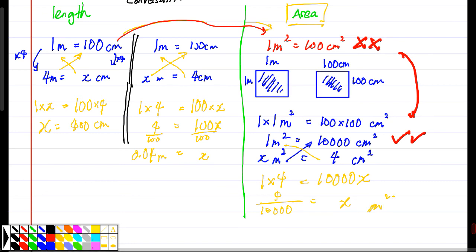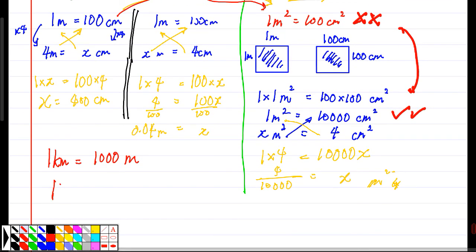So we got the answer. Now pause the video here and copy this question first. 1 km, I know, is 1,000 m. Now if I ask you, 1 km squared equals how many meters squared? What is this answer? Pause the video now and try.